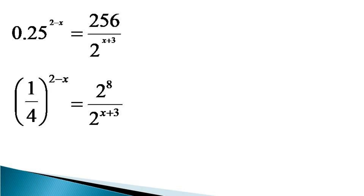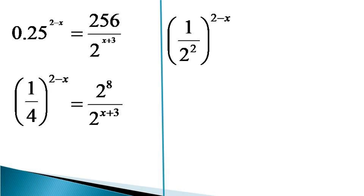On the left hand side, 1 by 4 can be expressed as 1 by 2 squared, so the left hand side becomes (1/2²) raised to the power (2 minus x), and this becomes equal to 2 raised to the power (8 minus (x plus 3)), as the indices are subtracted in case of division.